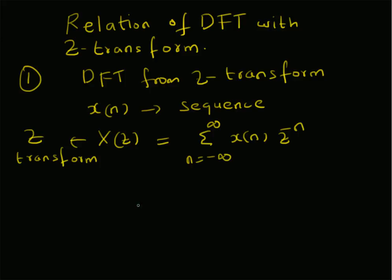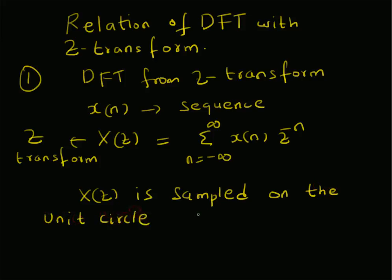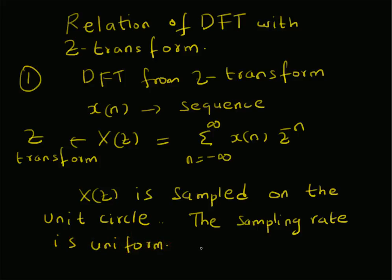Now, consider the Z-transform and let us assume that X(Z) is sampled on the unit circle, and the sampling rate is uniform. Let us assume that the number of samples is equal to N. That means we have N equally spaced samples on the unit circle corresponding to X(Z).